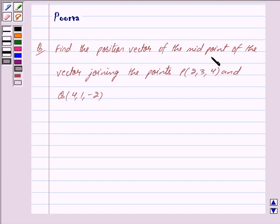Find the position vector of the midpoint of the vector joining the points P(2, 3, 4) and Q(4, 1, -2).